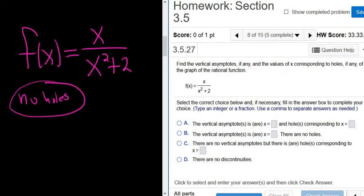After you look for holes, you look for vertical asymptotes. You take the bottom and set it equal to 0.